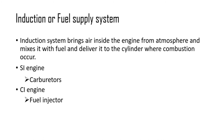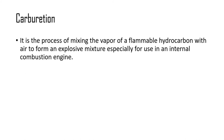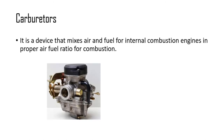The induction and fuel supply system brings air inside the engine from the atmosphere, mixes it with the fuel, and delivers it to the cylinder where combustion occurs. The fuel supply system handles everything from the fuel tank to delivering the mixture to the cylinder. In an SI engine, a carburetor is used; in a CI engine, a fuel injector is used. Carburetion is basically the mixing of hydrocarbon fuel and air to form an explosive mixture for the internal combustion engine.